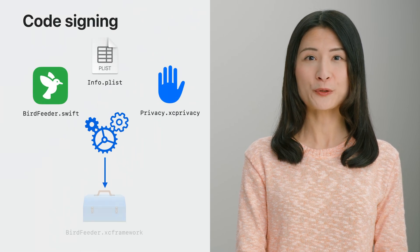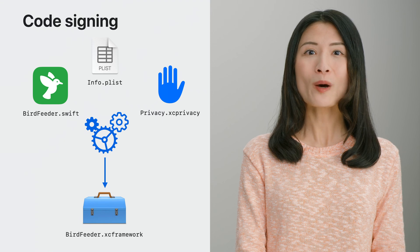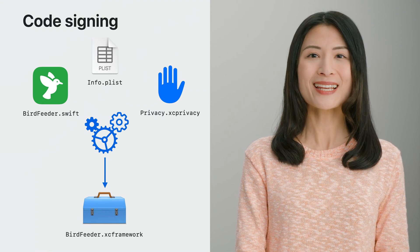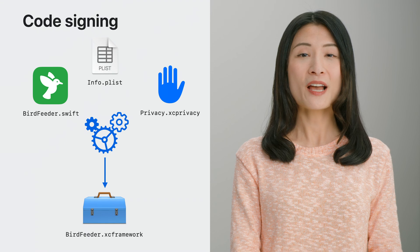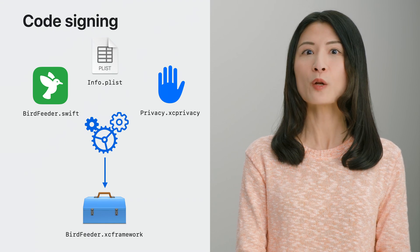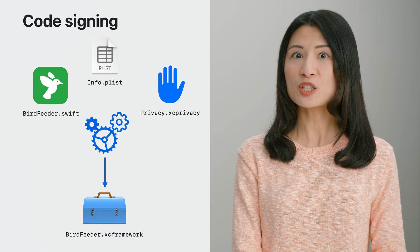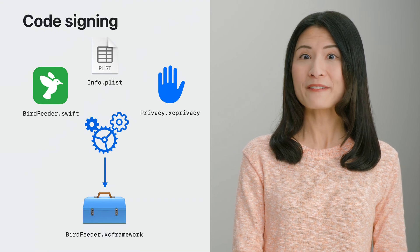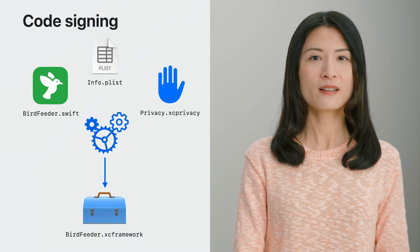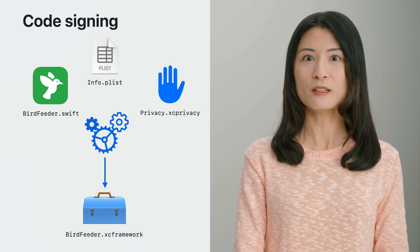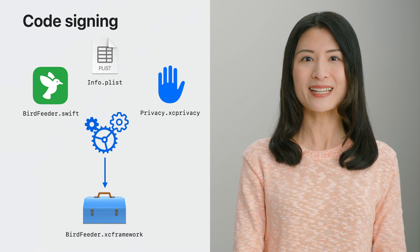When you are developing an SDK for app developers to use, you want to ensure that no one can modify or tamper with it during its distribution to your SDK clients. Code signing is a mechanism to cryptographically link the final compiled binary and the associated metadata — such as the Info.plist or the privacy manifest for your framework — or, for certain types of distribution, the source code itself with your developer identity.